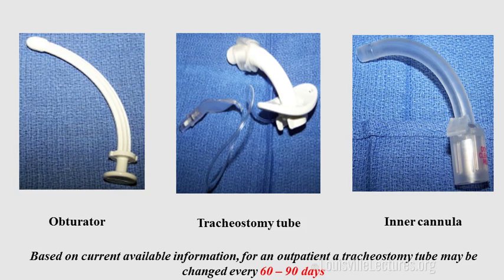When you change the trach, you put the obturator inside the tracheostomy tube, apply some gel, position the patient supine with some degree of hyperextension of the neck. Then you remove the older tube and insert the new one. Don't use force — if you meet resistance, never use force, otherwise you may create a false track that goes into the mediastinum and cause a complication.